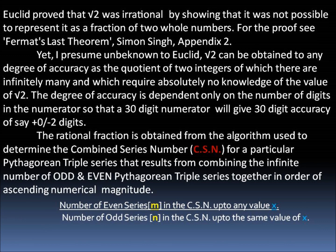Together in order of ascending numerical magnitude, so that the number of even series M in the CSN up to any value X, divided by the number of odd series N in the CSN up to the same value of X, will give root 2 to any degree of accuracy.